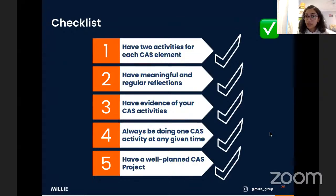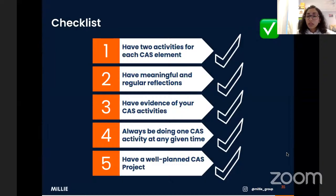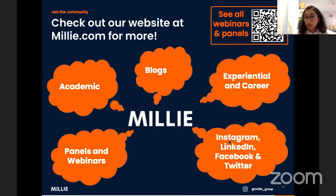Here's a five-point checklist to make sure you pass CAS — take a picture if you want to refer to it later. One: have two activities for each CAS element. Two: have meaningful and regular reflections that you write as you do the activities. Three: have evidence for your CAS activities — anything at all that shows you're doing it. Four: always be doing one CAS activity at any given time — it's a continual process. Five: have a well-planned and meaningful CAS project. Tick all five and you'll finish CAS well before your final May exams.